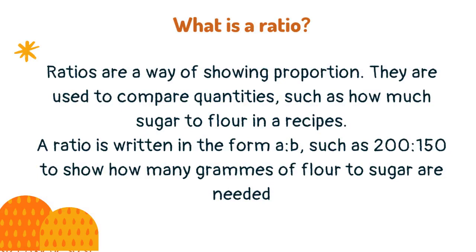Ratios are a way of showing proportion. They are used to compare quantities, such as how much sugar to flour in recipes. A ratio is written in the form A to B, such as 200 to 150, to show how many grams of flour to sugar are needed.